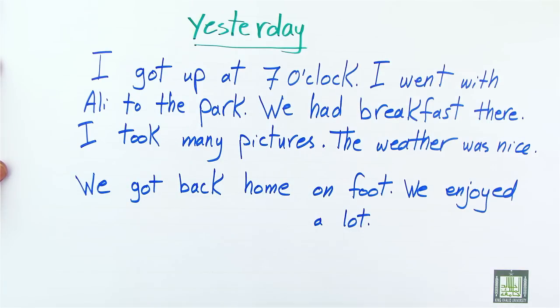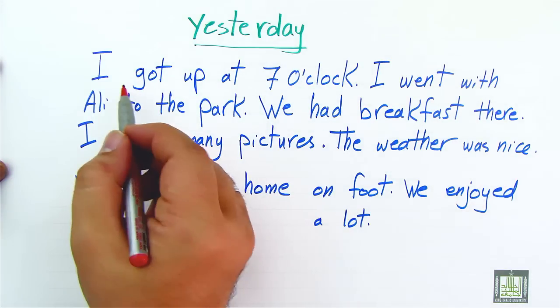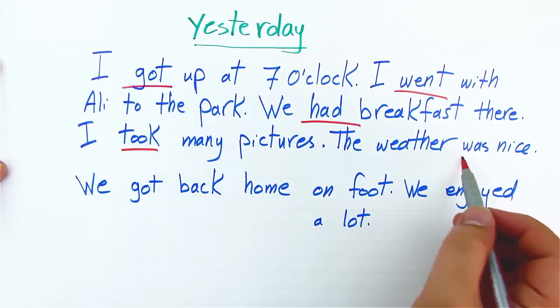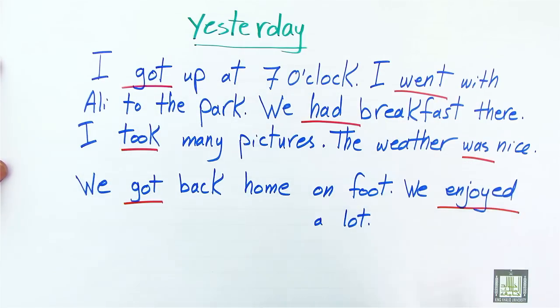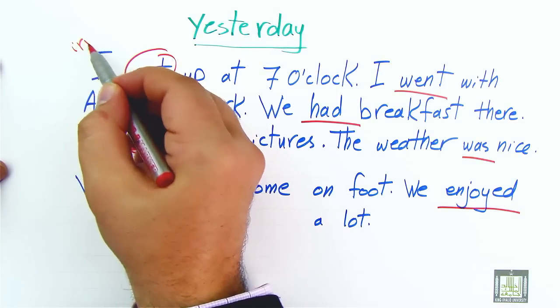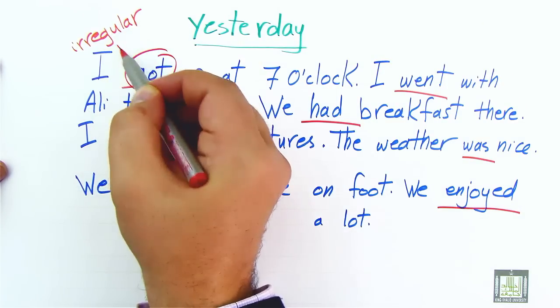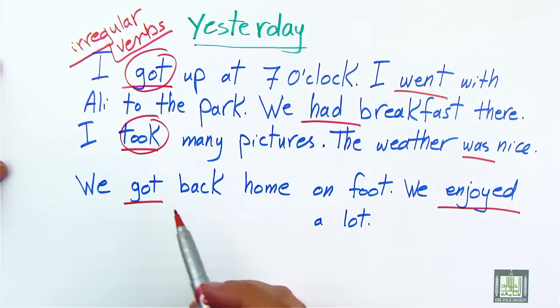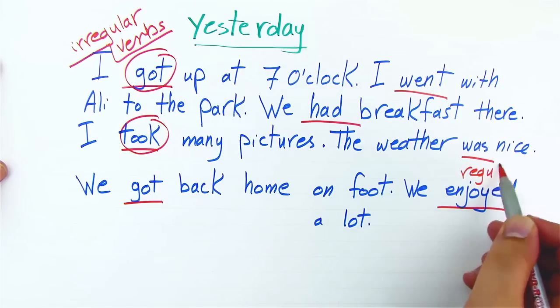Notice with me, since we are talking about past events, we stuck to the use of past simple forms: got, went, had, took, was, got, enjoyed. And we noticed that we have used many forms of what we call irregular verbs. And I believe you can study irregular verbs in grammar section. And we have also regular forms.